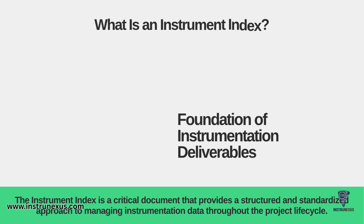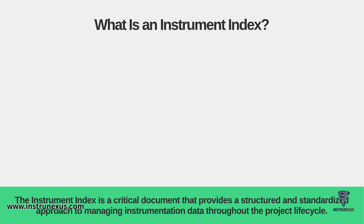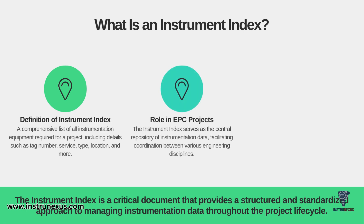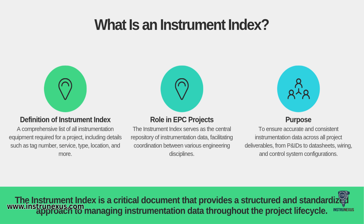What is an Instrument Index? At its simplest, it's a comprehensive list of every single piece of instrumentation equipment required for your project. This includes critical details like the tag number, the process service, the instrument type, its physical location, and much more. In an EPC project, its role is to be the central repository for all instrumentation data, facilitating coordination between all the different engineering disciplines. The ultimate purpose is to ensure accurate and consistent data across all project deliverables — including P&IDs, data sheets, wiring, and control system configurations.